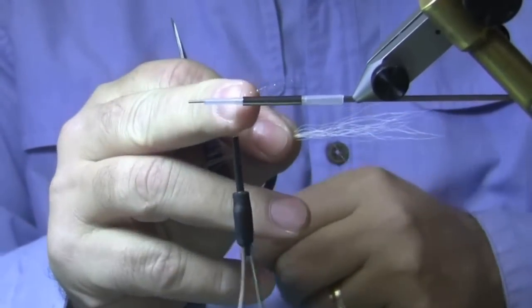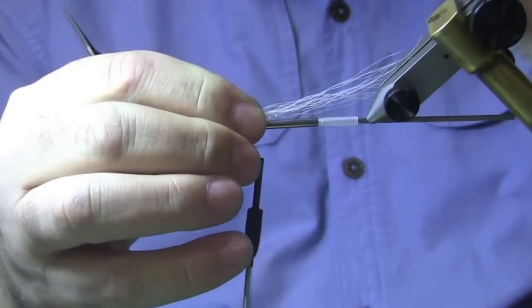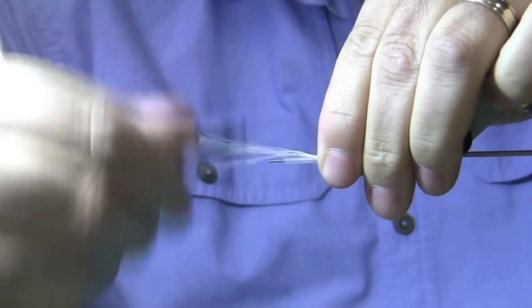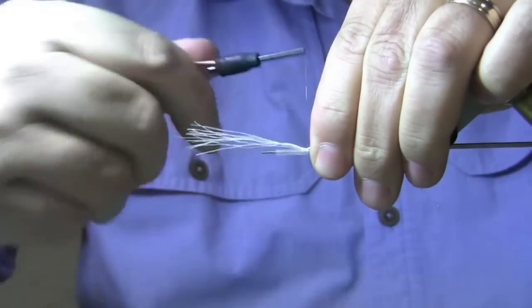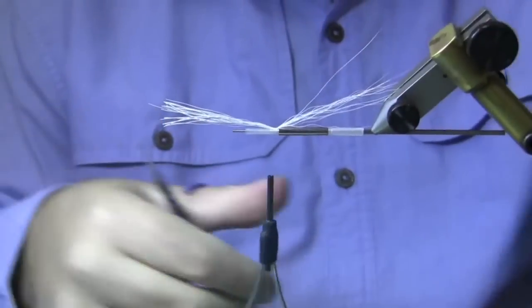Now when you tie this in, do not tie it up against the flexi tube. That'll cause it to flare as well. Tie it so it's just away from it a bit. This will lay down there.